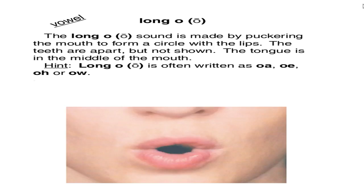The long ooo sound is made by puckering the mouth to form a circle, a long circle, with the lips. The teeth are apart but not showing. The tongue is in the middle of the mouth.